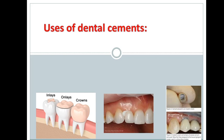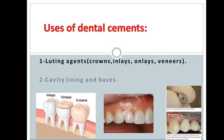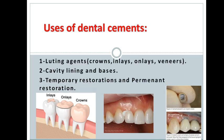Let's talk about the uses of dental cements. We have three types of dental cements: luting agents, cavity lining and bases, temporary restoration, and permanent restoration. Luting agents are used to cement crowns, inlays, onlays, and veneers. Cavity linings such as calcium hydroxide, and bases like zinc oxide eugenol, or temporary restorations like zinc oxide eugenol and glass ionomer — we'll talk about those later.